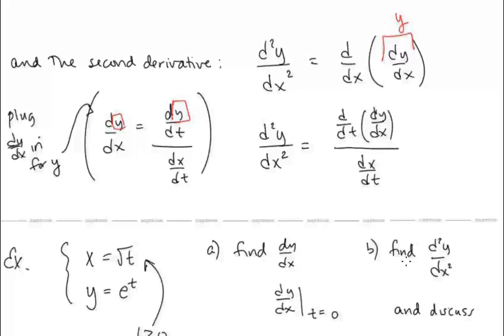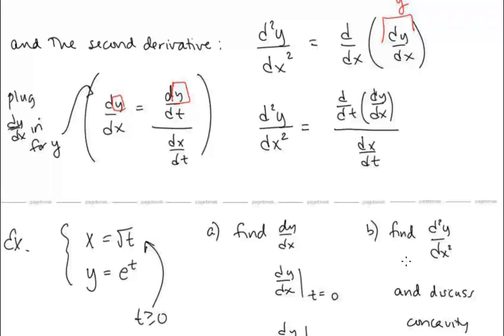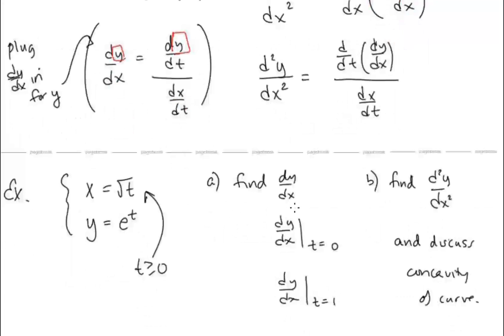Let's take a look at an example. If we have x equals radical t and y equals e to the t, we want to find dy/dx and evaluate at t equals 0 and t equals 1. We also want to find the second derivative d²y/dx² and discuss the concavity of the curve.